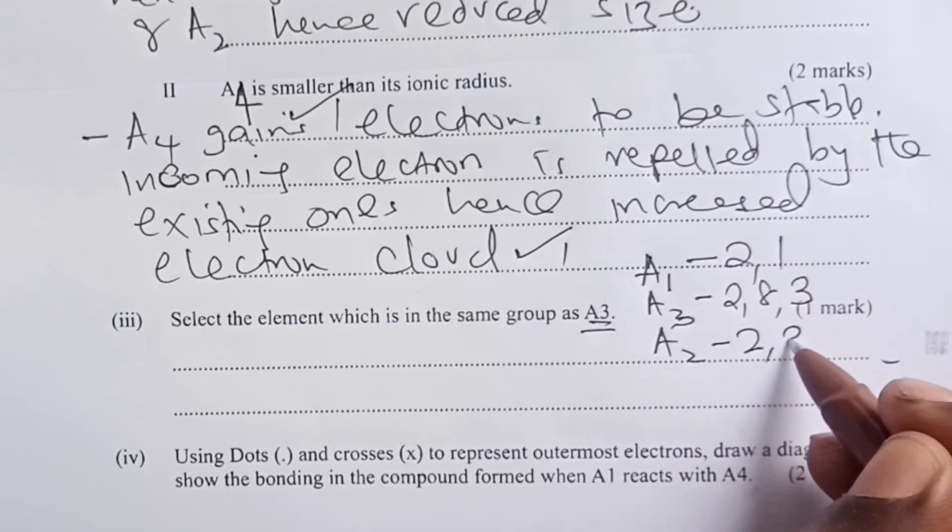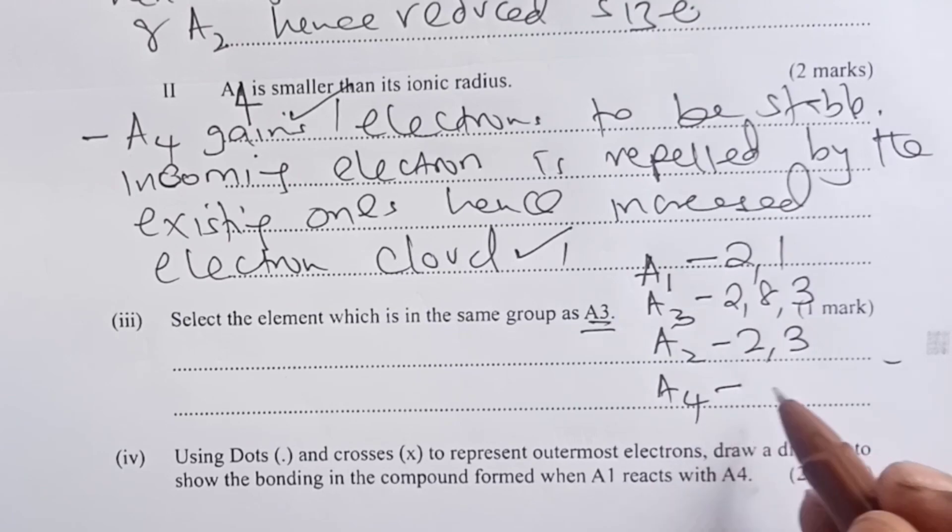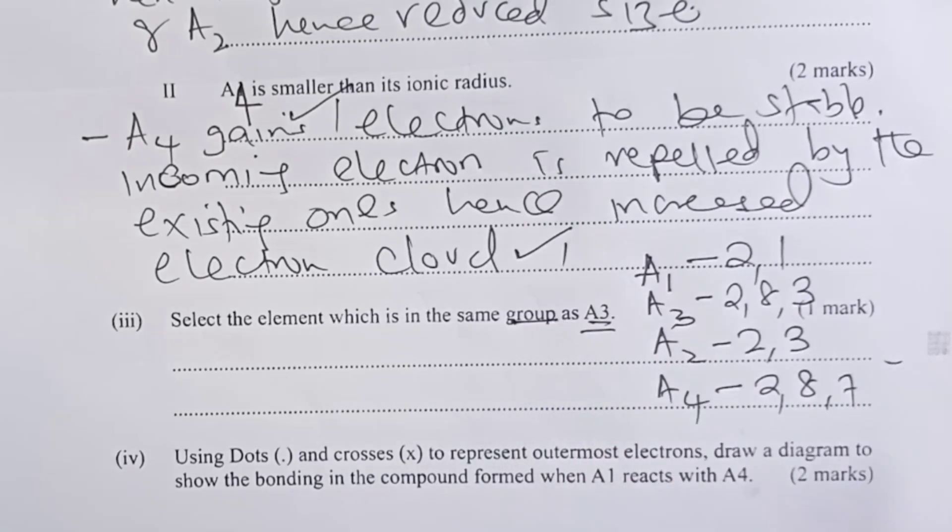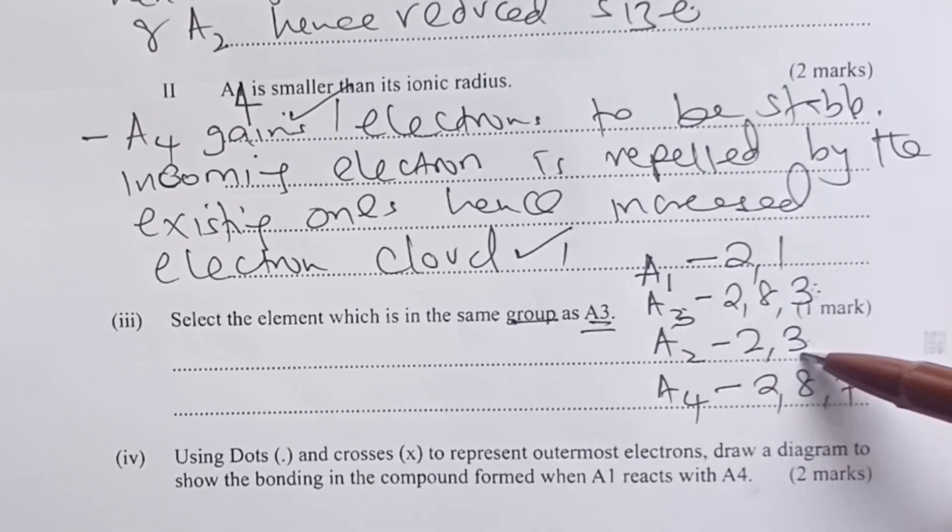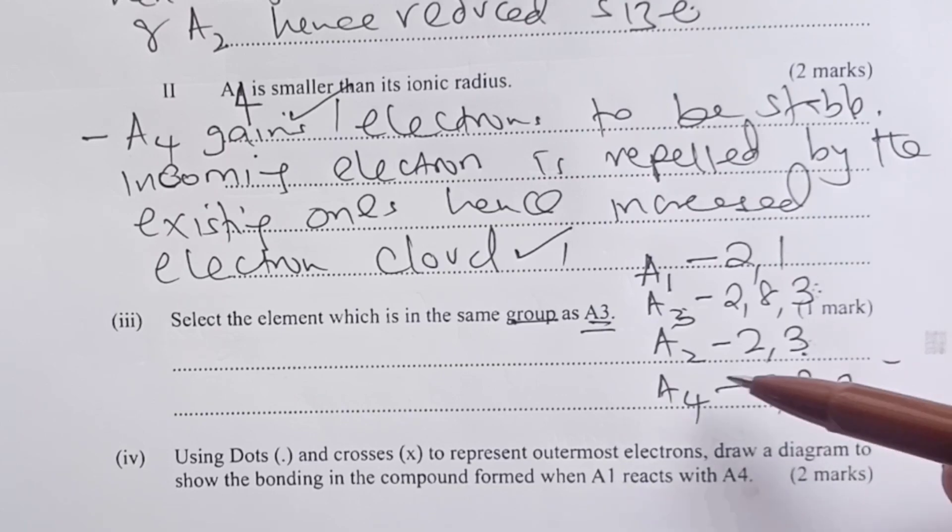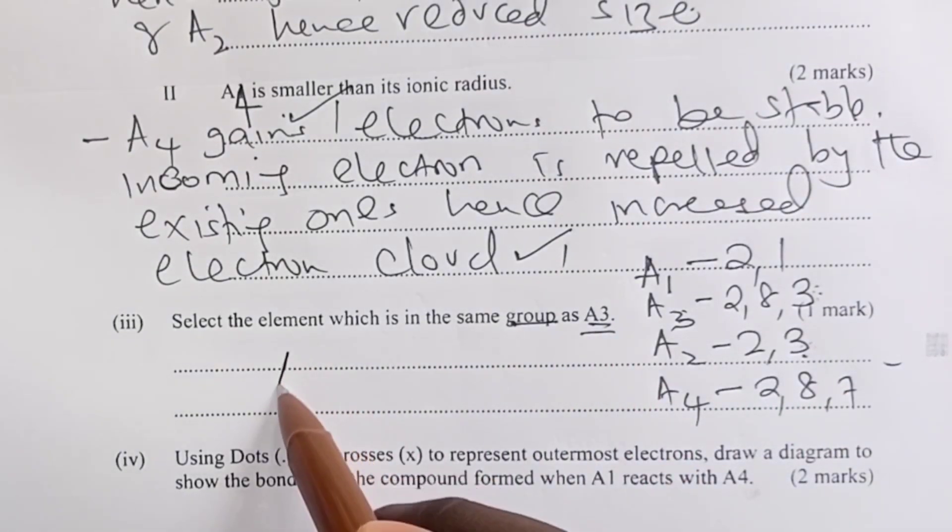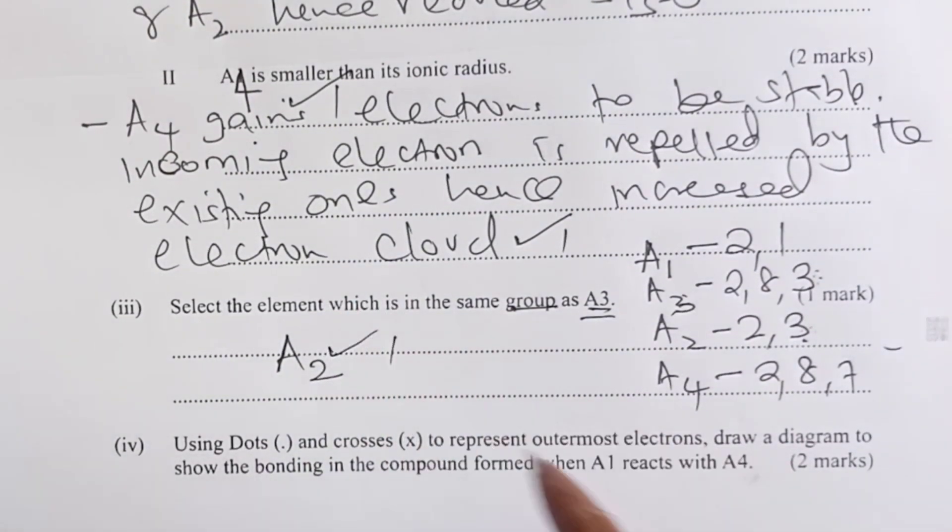And A4, atomic number 17, configuration 2,8,7. So to know the group, we normally check the number of electrons in the outermost shell. And you can see A3 shares the same number of electrons in the outermost shell with A2. So same group as A3, the element is A2 to give the one mark for that section.